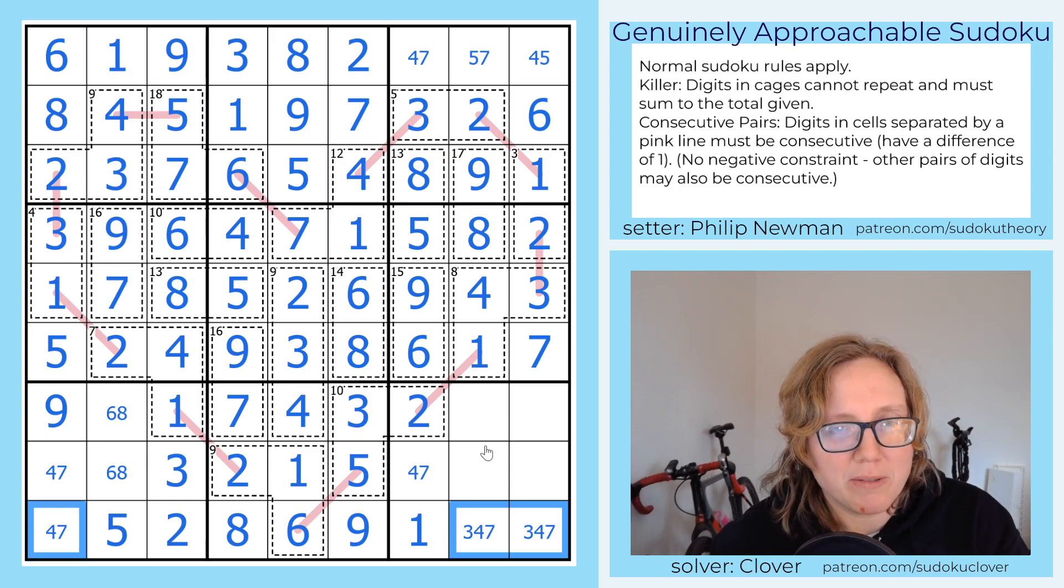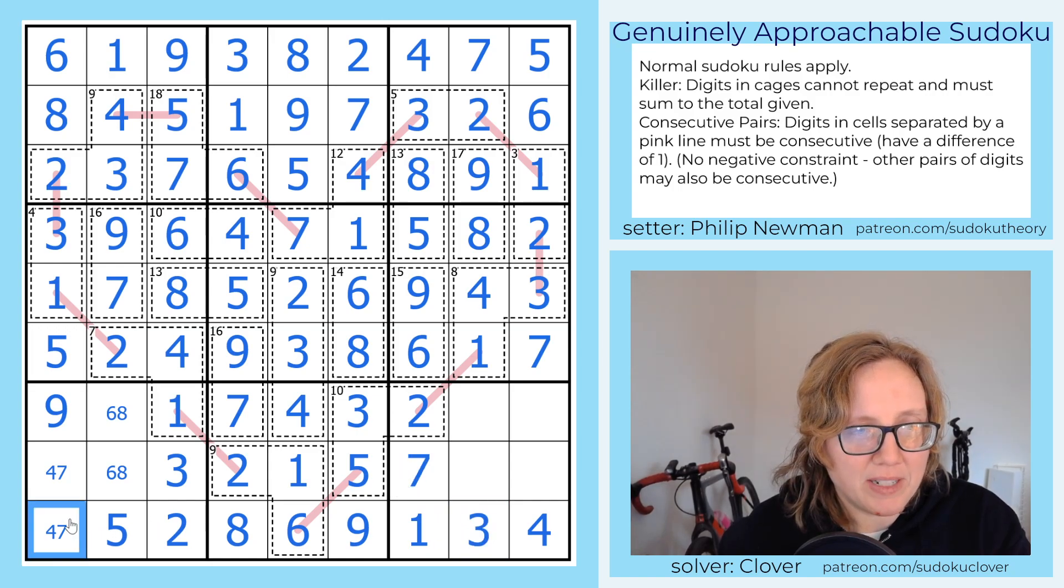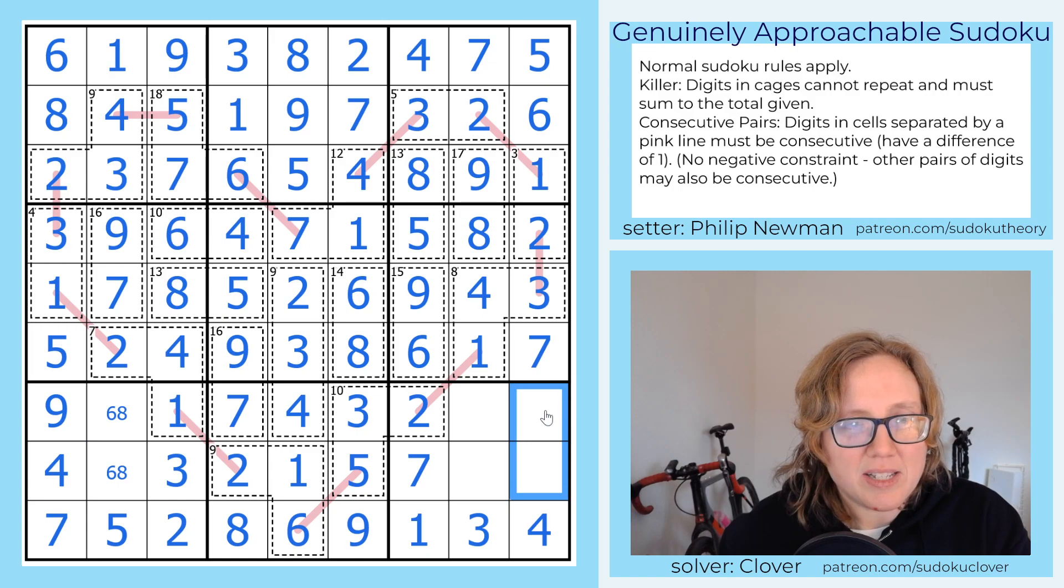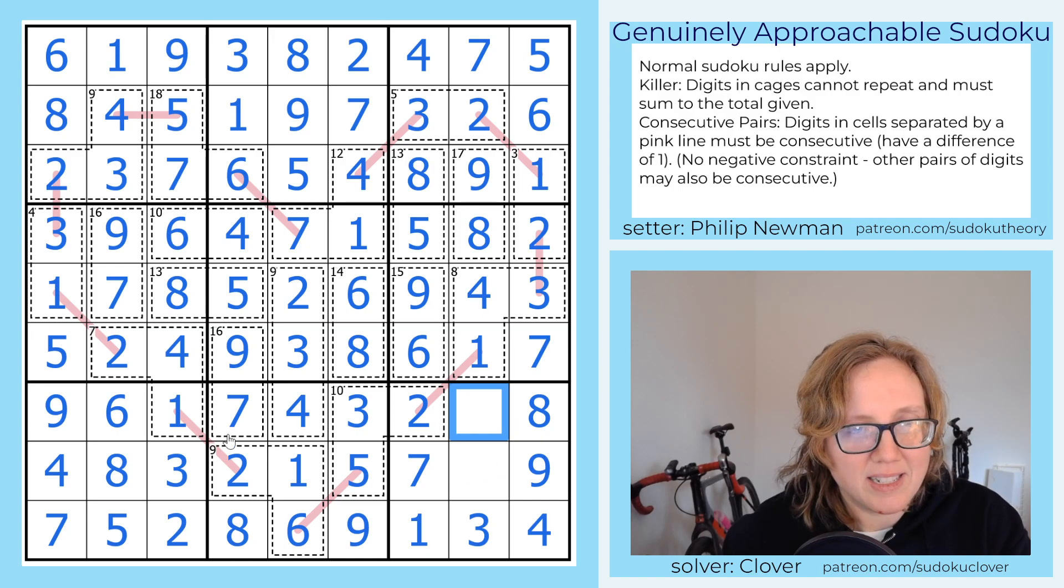Now horizontally, this is looking pretty restricted. These are going to be three, four, and seven to finish the row. Three and seven here place a four, which resolves this stuff up at the top. That's now a seven, a three, a seven, and a four. And these are eight and nine, six and eight, and five and six.